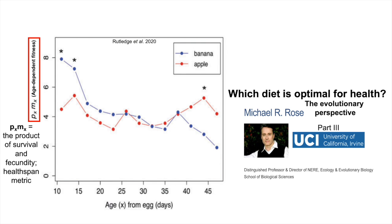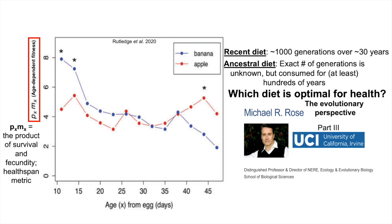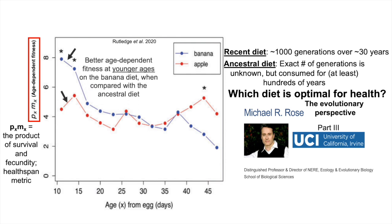When looking at this healthspan metric on the y-axis plotted against age on the x-axis, we can see that on the evolutionarily recent diet — which is banana — these flies have been raised on banana for about a thousand generations over about 30 years. That may seem like a lot of generations, but in comparison, for the ancestral diet, these flies have eaten apples. The exact number of generations is unknown, but it is known that fruit flies, Drosophila, have consumed apple for at least hundreds of years.